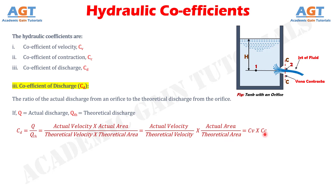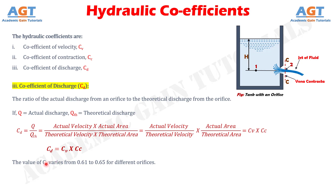So finally, the equation stands as the coefficient of discharge CD equals to the product of coefficient of velocity CV and the coefficient of contraction CC. The value of coefficient of discharge CD varies from 0.61 to 0.65, and for general purpose the value of coefficient of discharge is taken as 0.62.